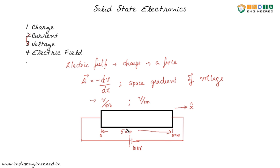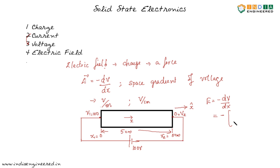Now we have defined the direction. We will be looking at the electric field along the positive x direction. We can say that the potential here is 100 volts and here we assume it to be at ground potential, that is 0 volts. So V1 is 100 volts and V2 is 0 volts. We can say that x1 equals 0 and x2 equals 5 centimeters. Now we can calculate the electric field: E equals minus dV by dx, that is the space rate of change of voltage, which we can calculate as minus of V2 minus V1 by x2 minus x1.